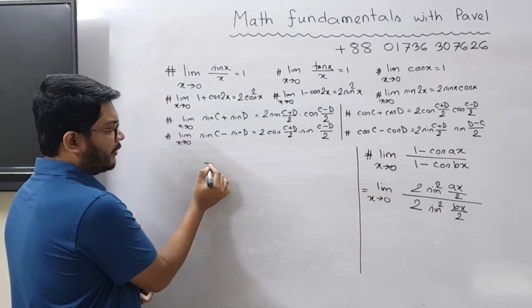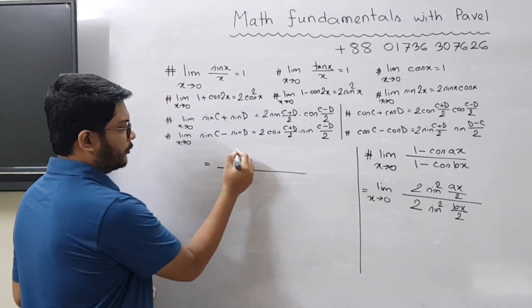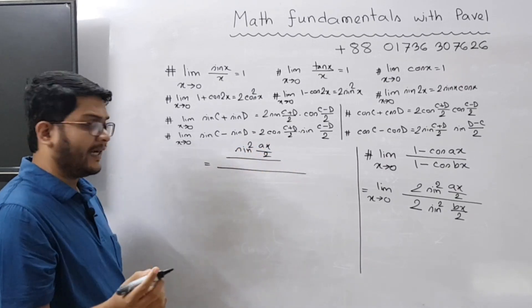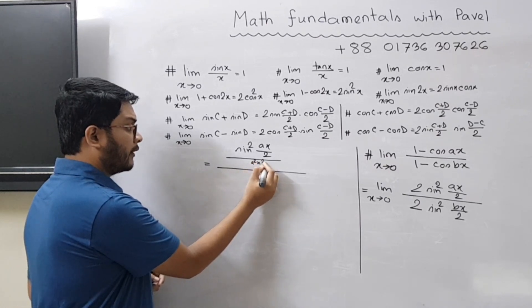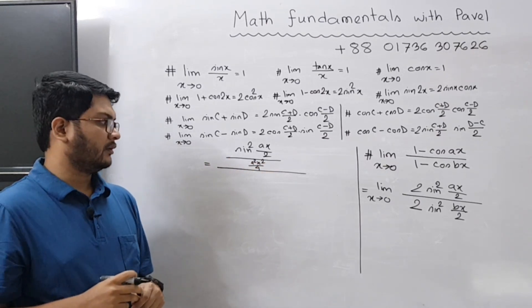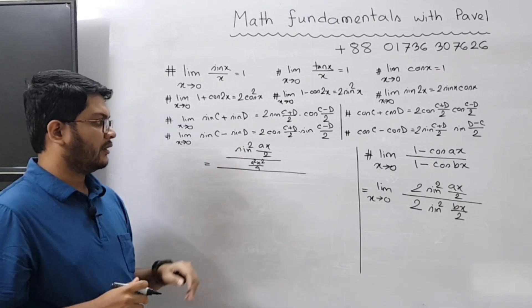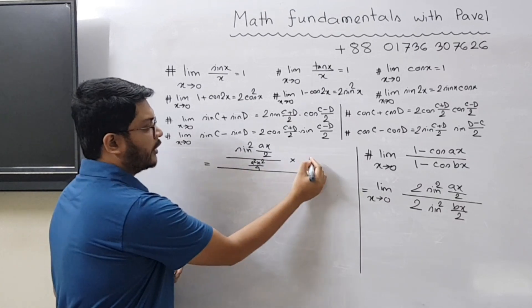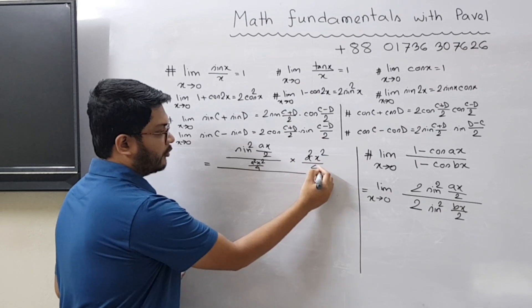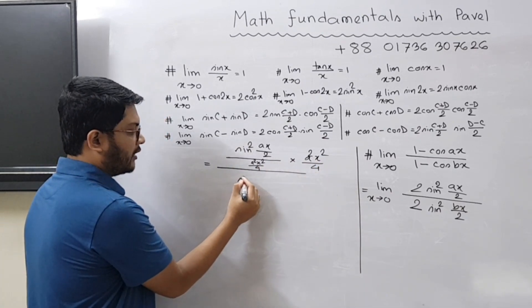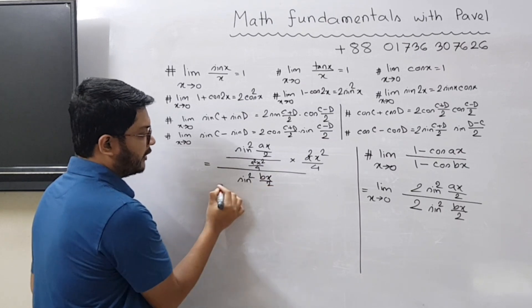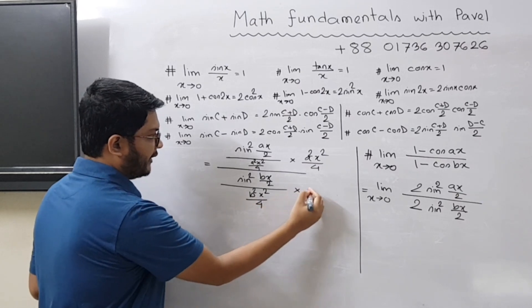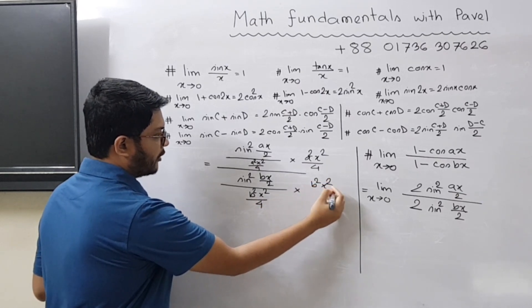Suppose you have sin² (ax/2) and you have sin² (bx/2). So you should have a²x²/4 here in the denominator of this expression. Since we divided with a²x²/4 we need to multiply with a²x²/4. Similarly here you have sin² (bx/2), you need to divide that with b²x²/4 and you need to multiply with b²x²/4.